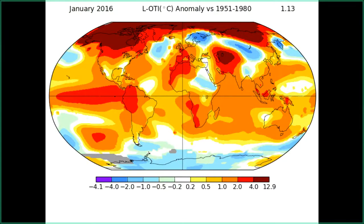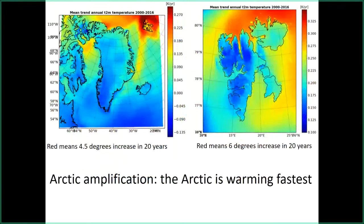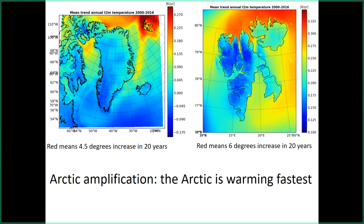The Arctic is getting warmer much faster than the rest of the world. This is called Arctic amplification in climate change studies. The Arctic has changed a lot, and specifically the location of Svalbard or Spitsbergen — we in the Netherlands call it Spitsbergen, in Norway they call it Svalbard — which is the island in the top right corner of the map. That's a place which is warming much more than its environment. If you look at the right side, you see a mean temperature increase of six degrees already in the last 20 years, which is enormous compared to the rest of the world.